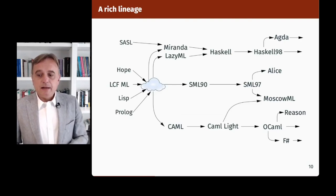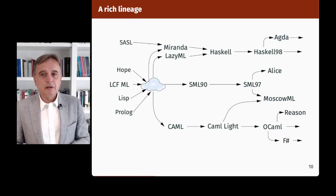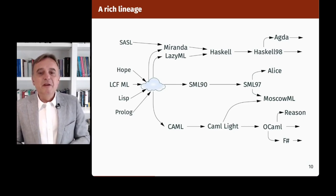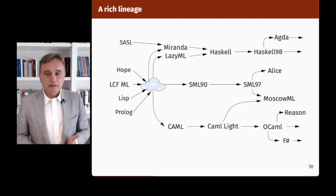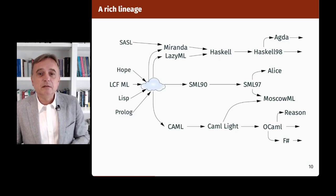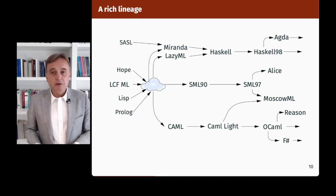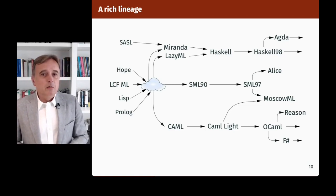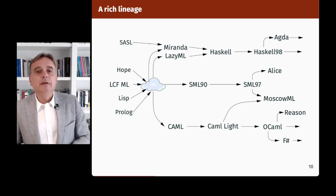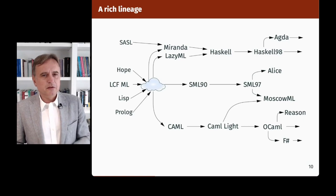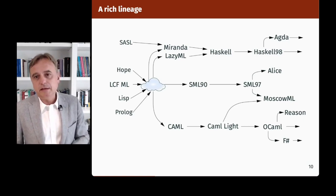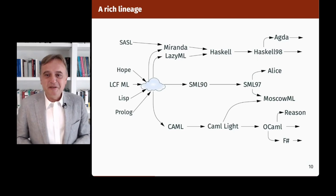From that initial design emerged an incredible number of languages — a kind of primordial soup from which emerged at least three lines of typed functional languages. One was Standard ML, led by Milner at Edinburgh, moving towards standardization and formal definition, and also adding modules. Another was a pure functional programming line with early languages like Miranda and Lazy ML, converging around Haskell in 1992. And the third is the Camel branch — the French branch — which we are going to talk more about today.